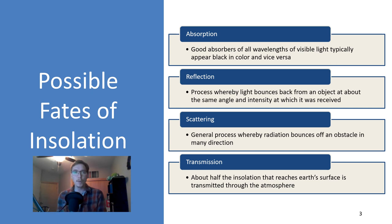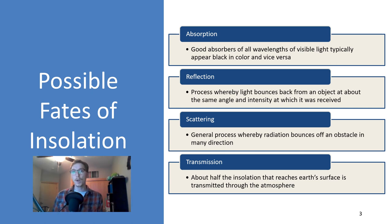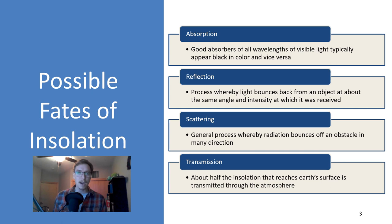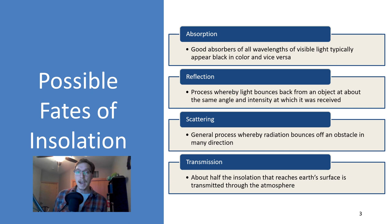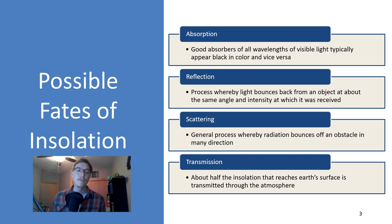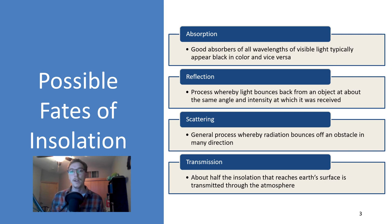Absorption: good absorbers of all wavelengths of visible light typically appear black in color, and vice versa — good reflectors appear white. Reflection is the process whereby light bounces back from an object at about the same angle and intensity at which it was received. Scattering is the general process whereby radiation bounces off an obstacle in many different directions. And transmission: about half the insolation that reaches earth's surface is transmitted through the atmosphere.